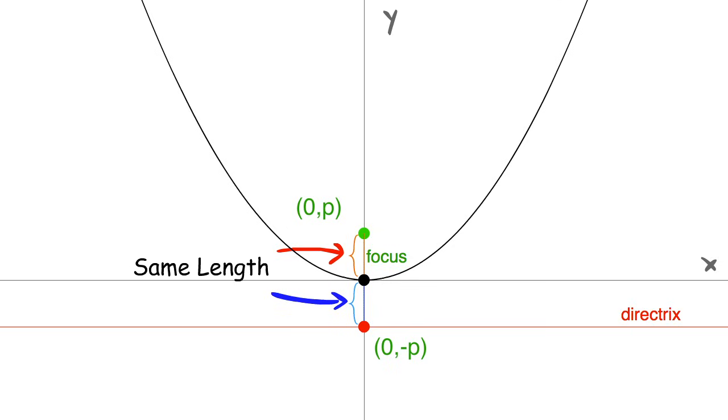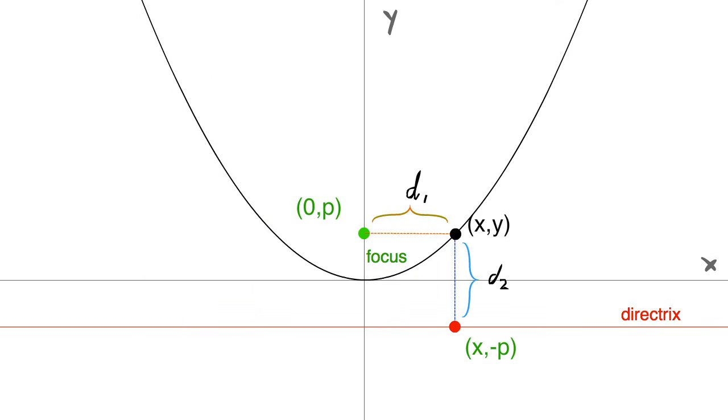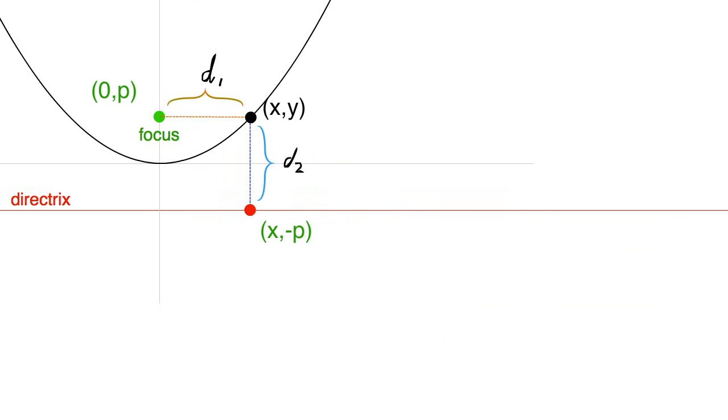What we want to do now is set up an equation that represents all the coordinate points that make up the parabola. So let's label the following line segments d1 and d2. Since both of these lines have the same length, d1 is equal to d2.